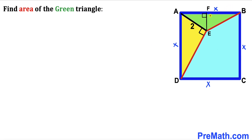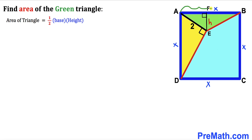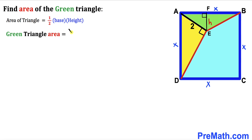Let me label EF as our height lowercase h. Now let's recall the area of a triangle formula: area equals one half times base times height. We can see the base of this green triangle is x and the height is h, so the green triangle area is going to be x times h divided by 2.